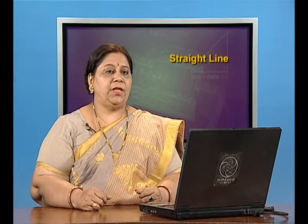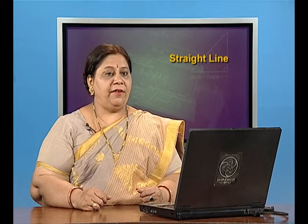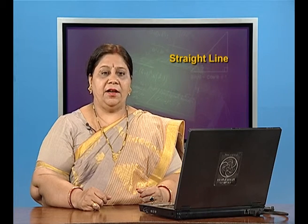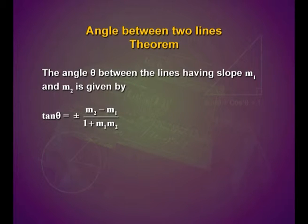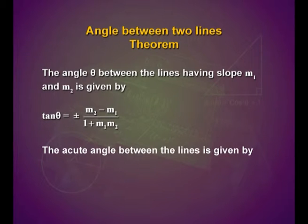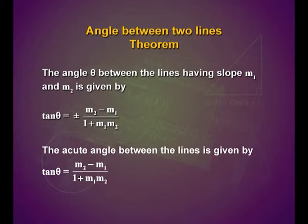Now let us study about the angle between two lines. We have a theorem: the angle theta between lines having slopes m₁ and m₂ is given by tan theta equals plus or minus (m₂ minus m₁) upon (1 plus m₁ times m₂). The acute angle between the lines is given by tan theta equals (m₂ minus m₁) upon (1 plus m₁ times m₂).